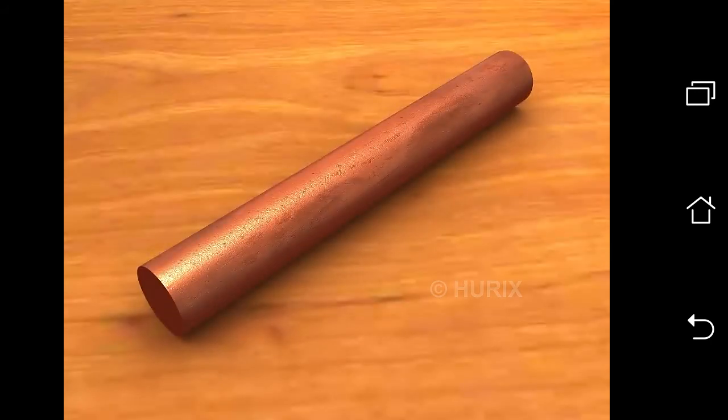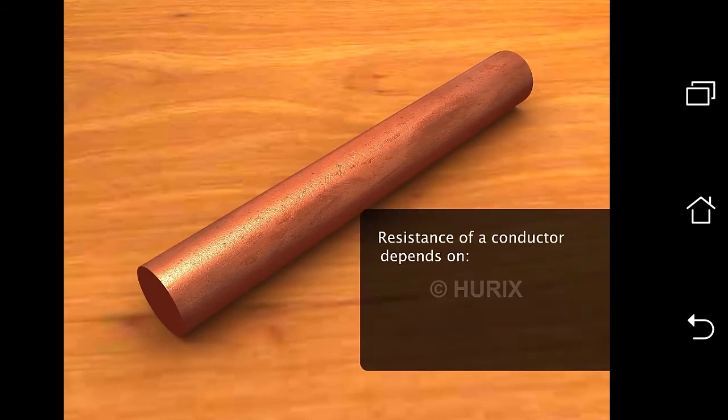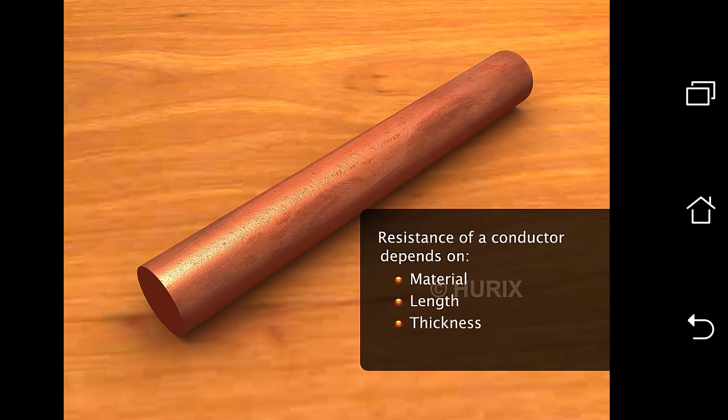There are four factors affecting the resistance of a conductor. The material of the conductor. The length of the conductor. The thickness of the conductor. And its temperature.